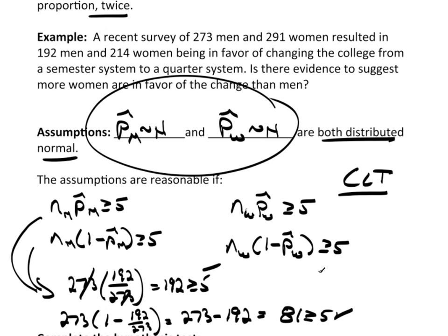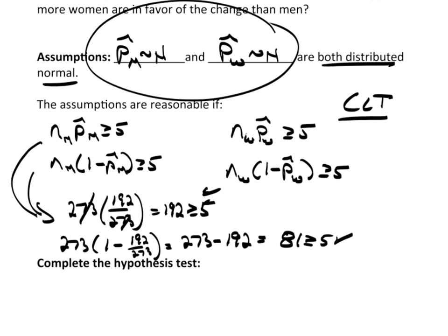And that's also clearly greater than or equal to 5, so I'm okay for the men. Now, when you do the same for the women, I'm not going to do it here. You can do it, piece of cake. You will get different numbers, but clearly they're both greater than 5, so check. We're good to go. So let's complete the hypothesis test.